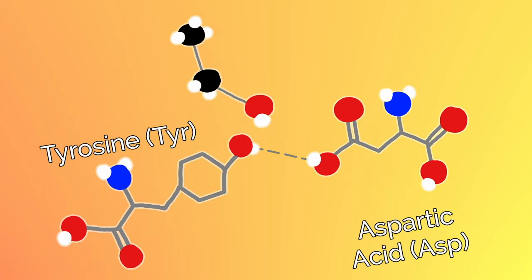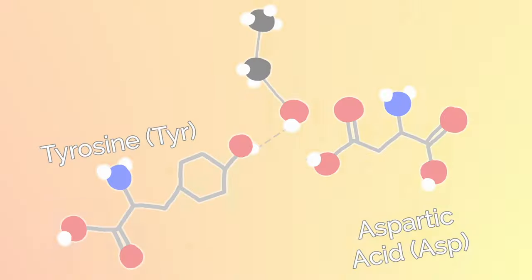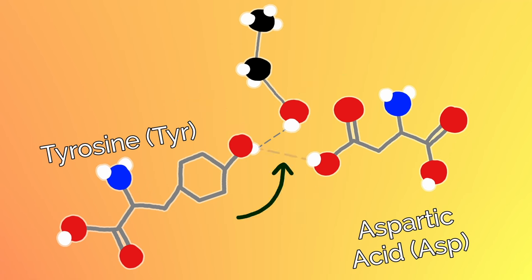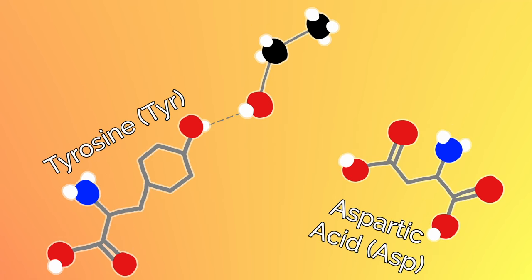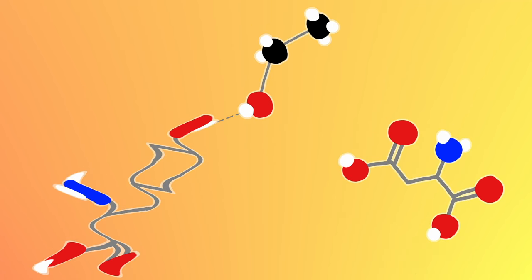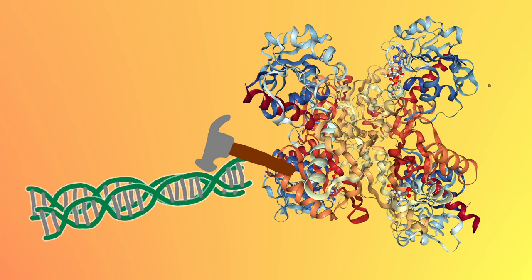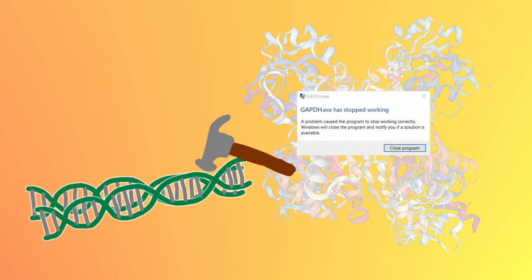Ethanol uses its hydroxyl end to make new hydrogen bonds between hydroxyl groups, each from tyrosine and aspartic acid, and breaks previously present hydrogen bonds with its carbon chain. The result is a gap within the chain, causing its original shape to shift, as well as those of tertiary and quaternary structures, making the entire protein non-functional.